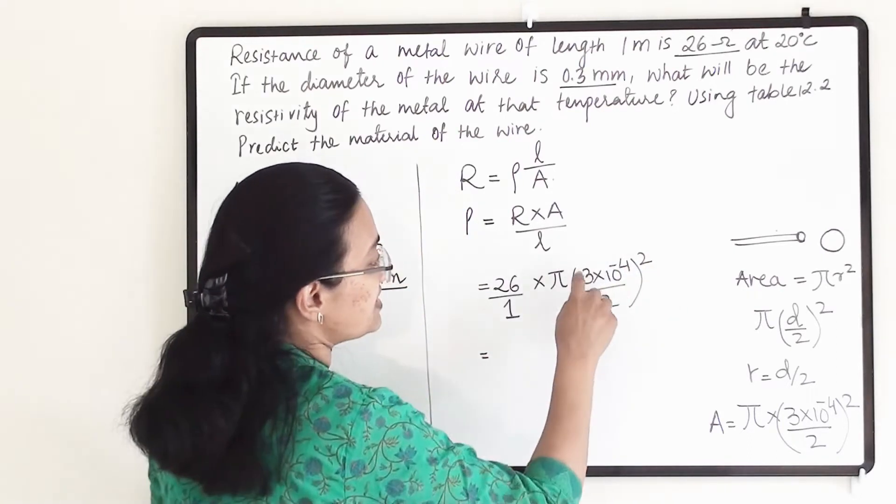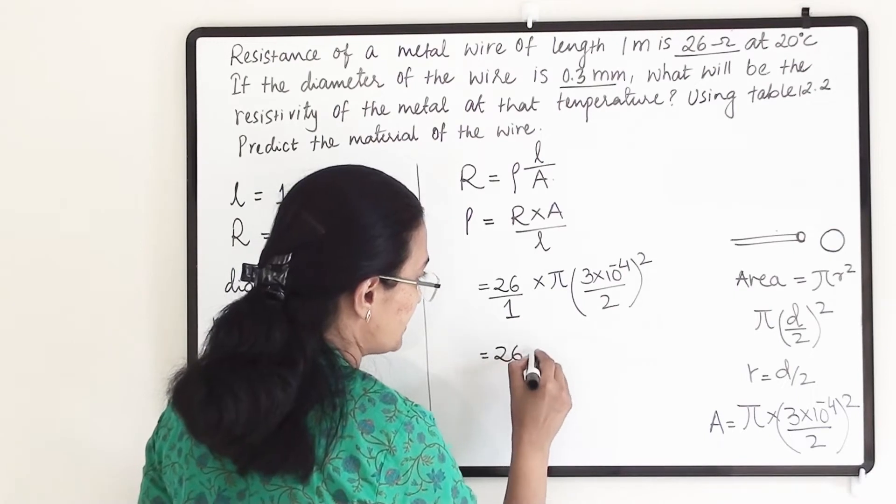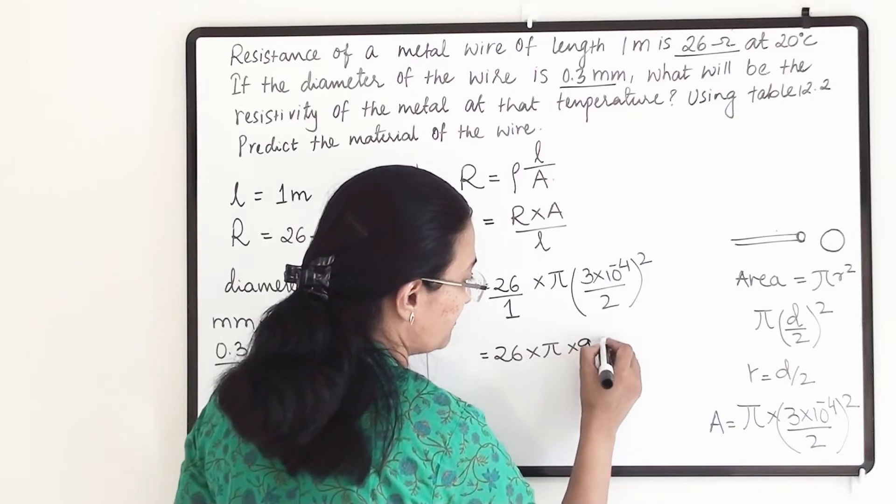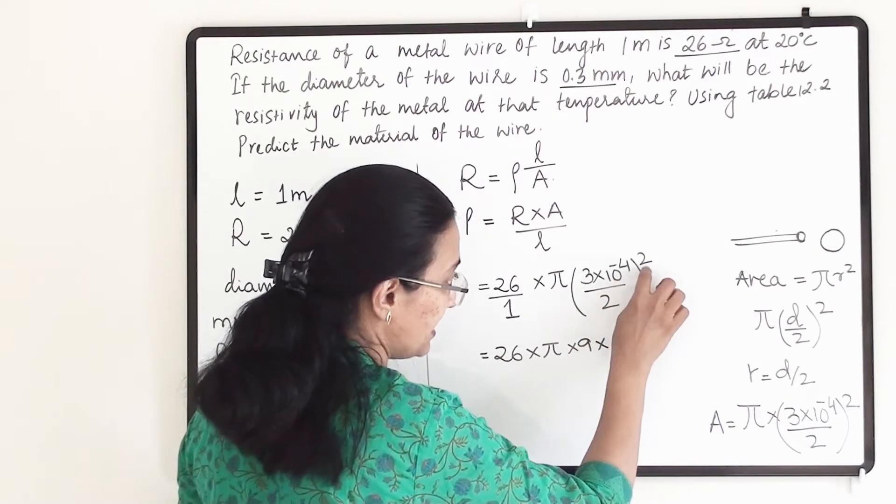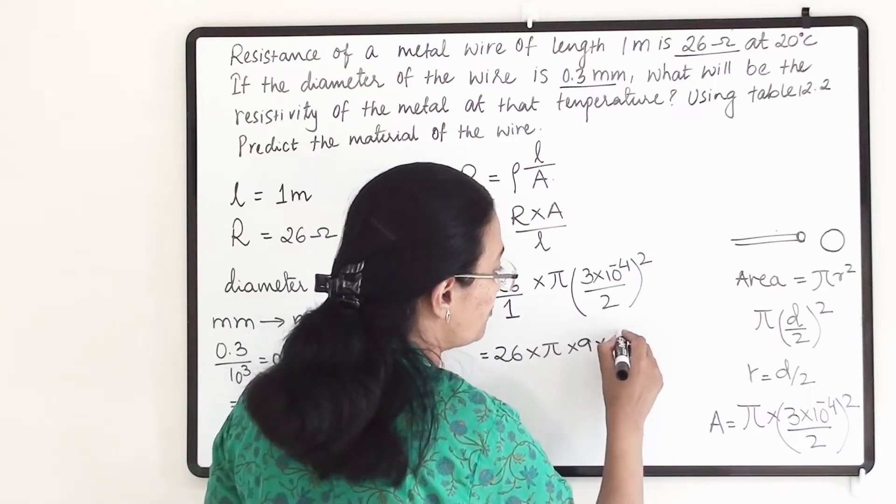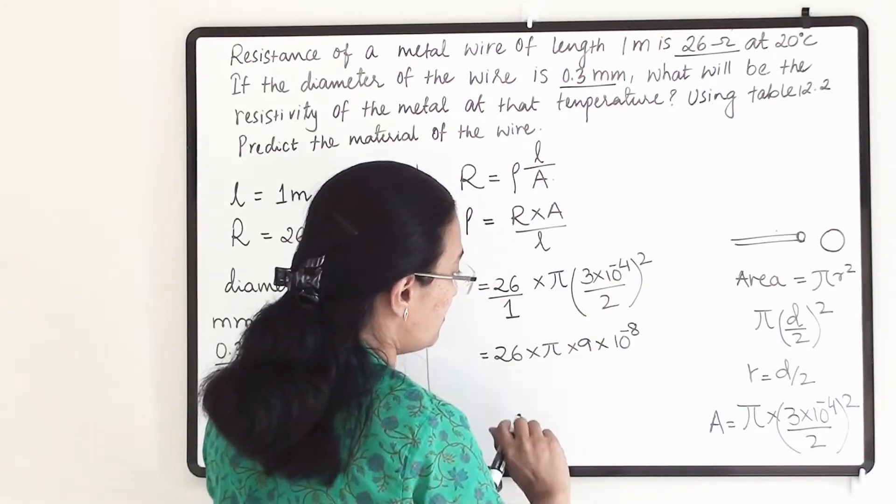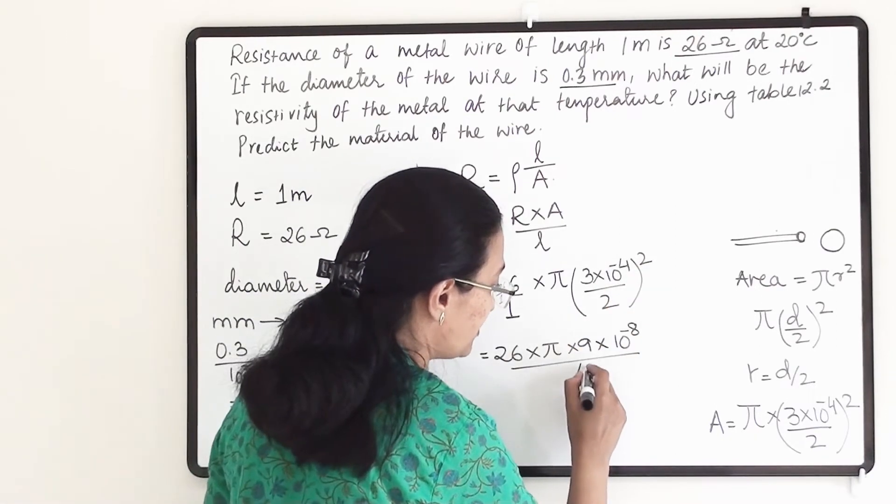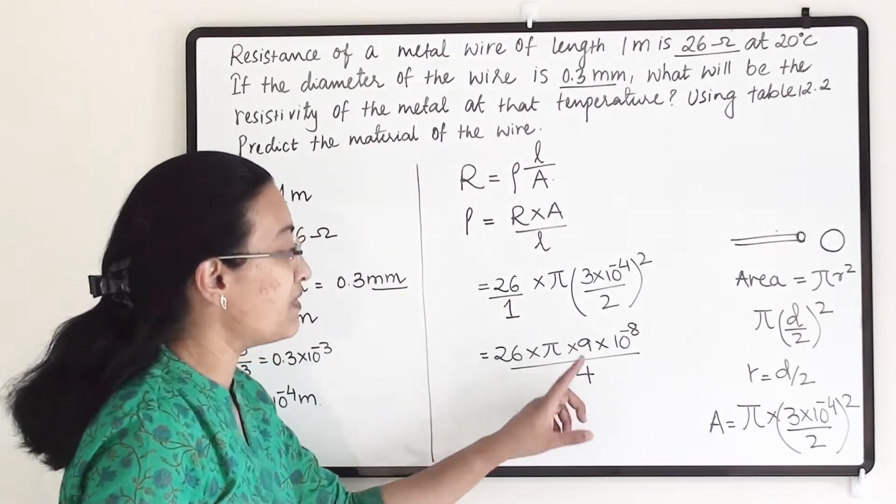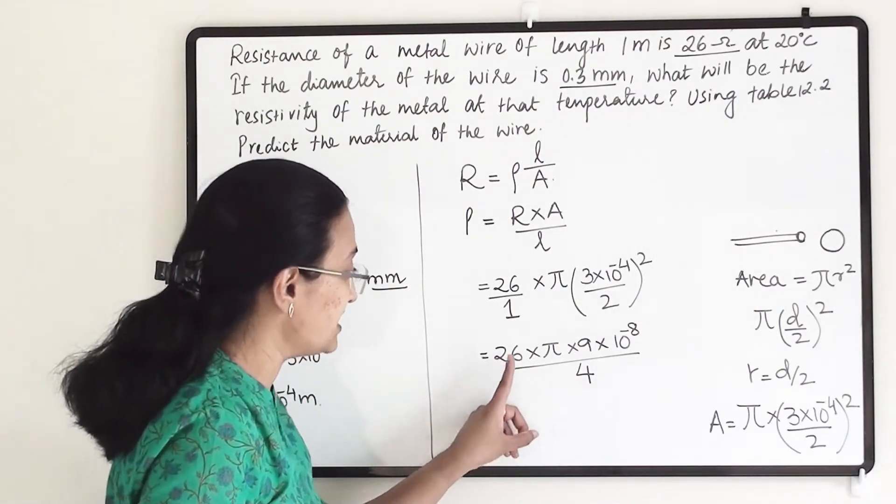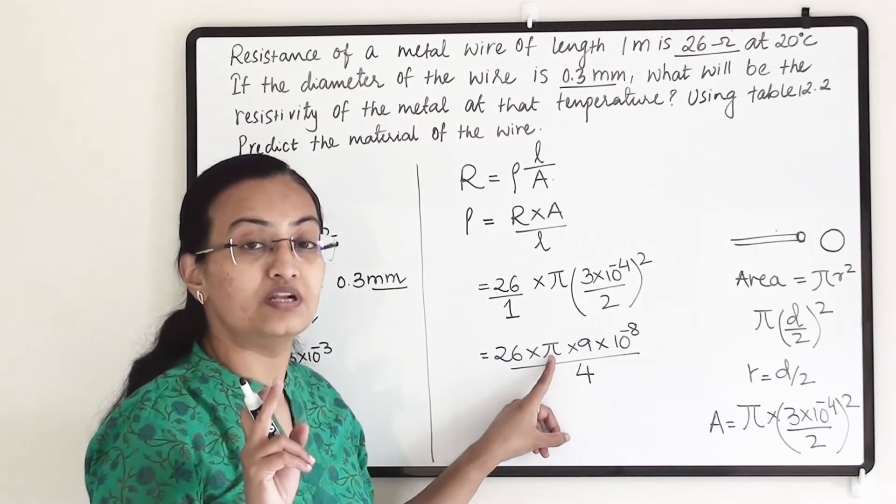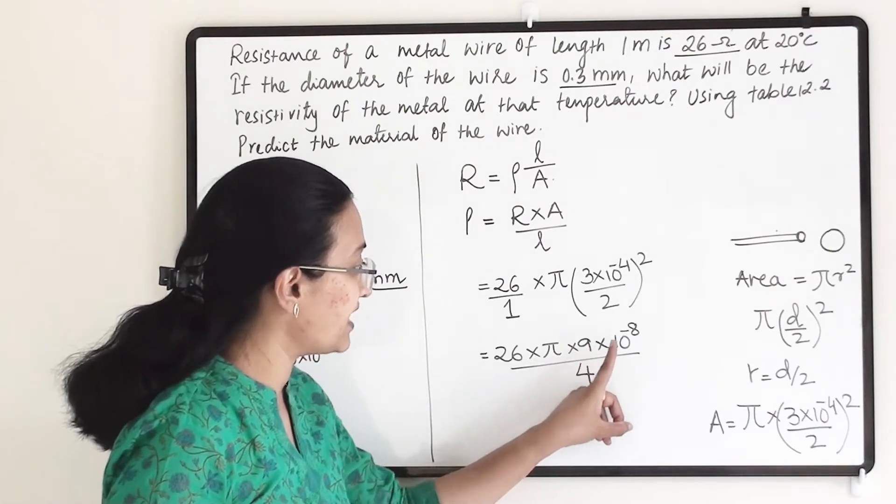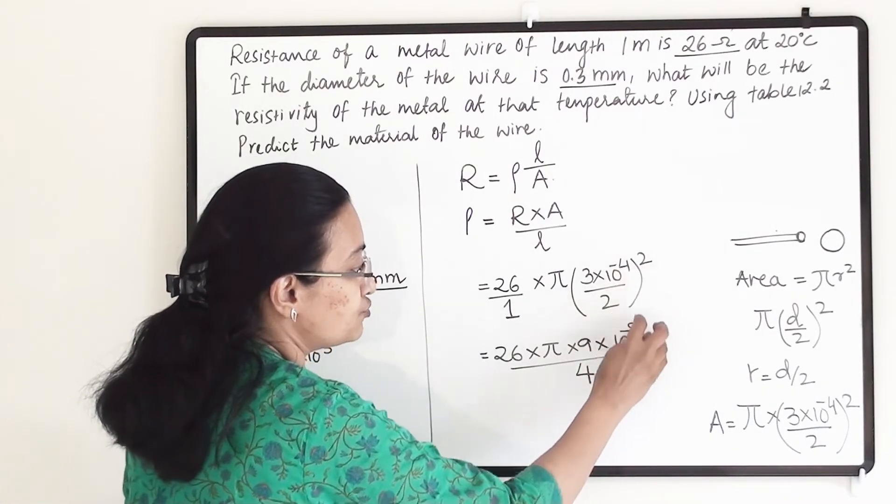Let us separate this square and we get 26 into pi into 3 square is 9 into 10 raise to minus 8. Divided by 2 square, so I write 4. This is 26 into pi. Pi is 22 divided by 7, or I can take 3.14 into 9 into 10 raise to minus 8, divided by 8.